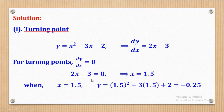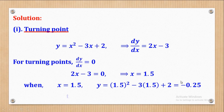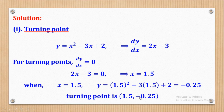Now I have to get the corresponding value of y for x. When x is 1.5, y will become -0.25. You substitute 1.5 in place of x, and you'll come up with -0.25. So the coordinates of the turning point are (1.5, -0.25).